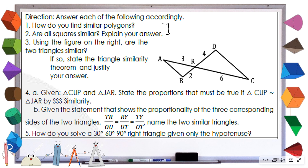For number three, using the figure on the right, are the two triangles similar? Angle R is congruent with angle R by the vertical angle theorem. Two becomes four and three becomes six — the sides doubled, so they are proportional. We have two sides which are proportional and an angle which is congruent, so you just identify the similarity theorem that applies and explain accordingly.